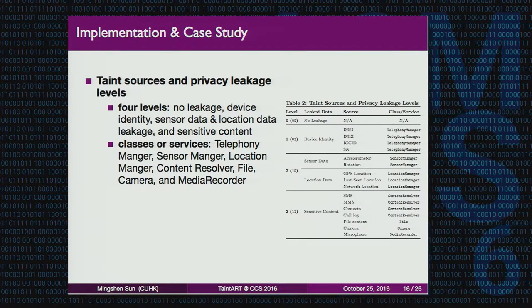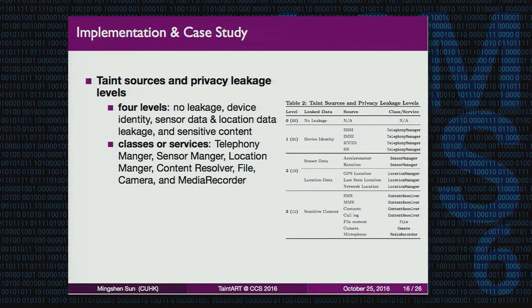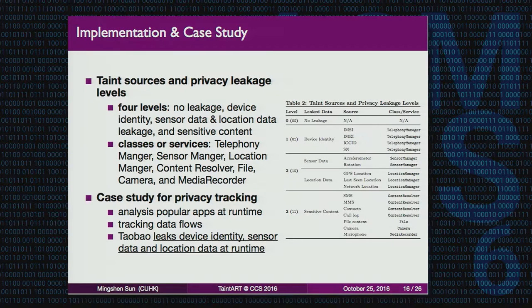For implementation, we implement the system on Android 5.0 using two bits to represent taint tag status, giving four sensitivity levels: 0 means no leakage, 1 means device identity, 2 means sensor and location data, 3 means sensitive content. To monitor taint propagation from these sources, we instrument classes and services including Telephony Manager, Sensor Manager, Location Manager, Content Resolver, and so on. We also did a case study tracking the data flow of some famous applications.